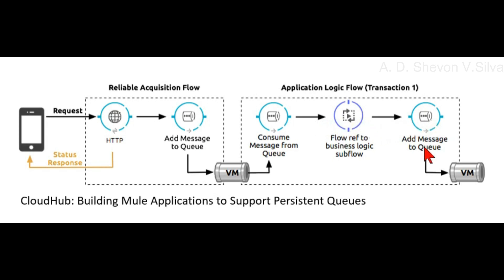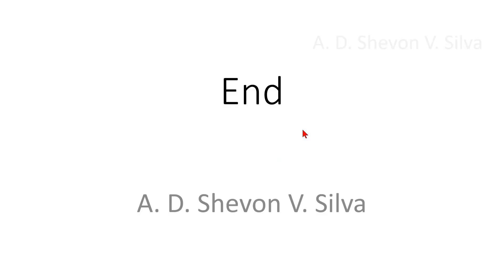The consume-message-from-queue is connected to the flow reference to the business logic sub-flow, and then to add-message-to-queue, which connects back to the VM. That is the end of this presentation. Thank you very much for watching.